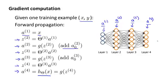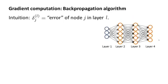Next, in order to compute the derivatives, we're going to use an algorithm called backpropagation. The intuition of the backpropagation algorithm is that for each node, we're going to compute the term delta superscript l, subscript j, that's going to somehow represent the error of node j in layer l. Recall that a superscript l, subscript j is the activation of the j-th unit in layer l. And so this delta term is in some sense going to capture our error in the activation of that node, or sort of how we might wish the activation of that node was slightly different.